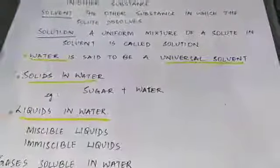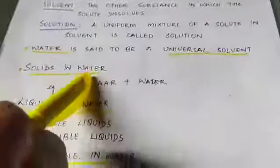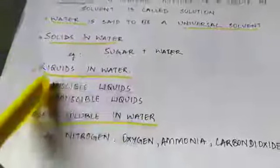Next, we will see how liquids get dissolved in water. There are a few liquids which can dissolve in water and a few which do not. Liquids which dissolve in water are known as miscible liquids. Examples of miscible liquids are glycerin, alcohol, and nail paint remover.